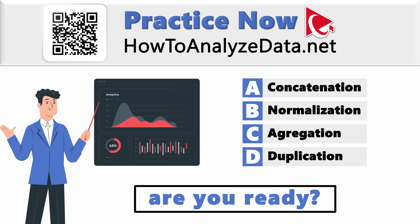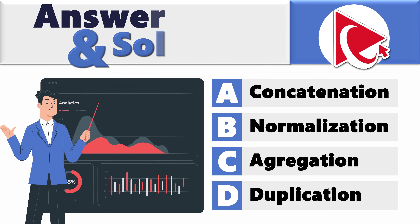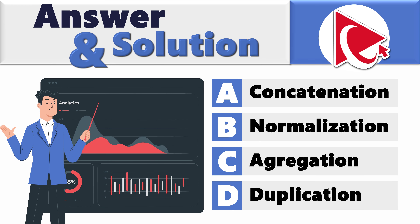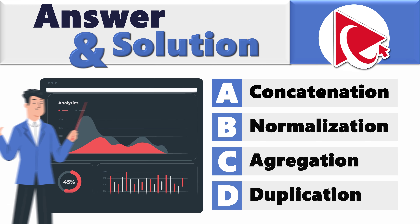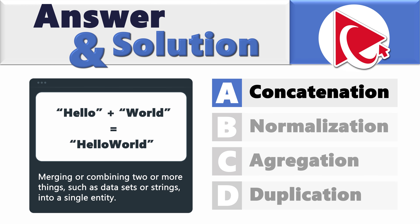Are you ready with your answer? Let's move forward so we can sync up the solutions. To best answer this question, let's understand the meaning of each word. Concatenation stands for merging or combining two or more things, such as datasets or strings, into a single entity.